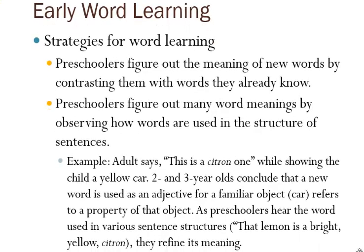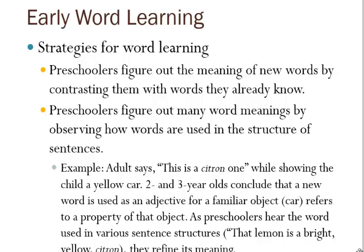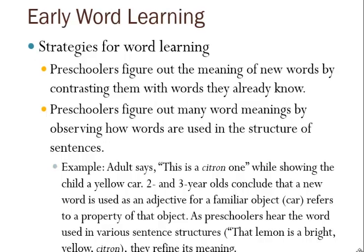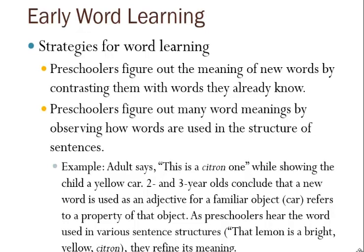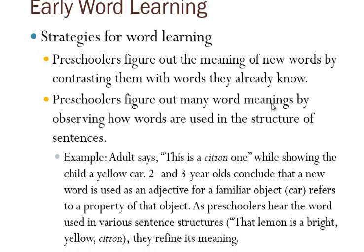Children usually begin understanding words before their first birthday, though most don't start talking until around 15 to 21 months — beginning with simple words like 'no,' 'yes,' or 'mommy,' then growing more complex. Preschoolers figure out the meaning of new words by contrasting them with words they already know — for example, if you know 'yes,' you learn 'no' as its opposite. Children can also figure out word meanings by observing how they're used in context, such as when an adult refers to something as 'citron,' a synonym for yellow.